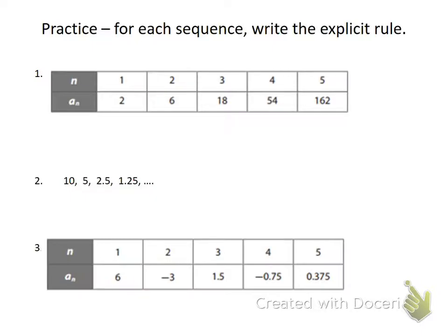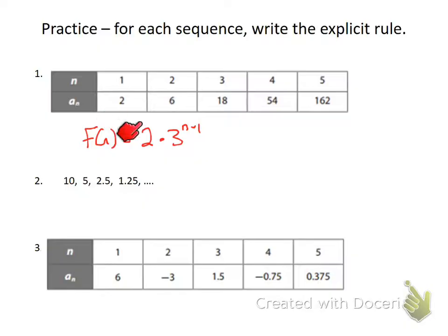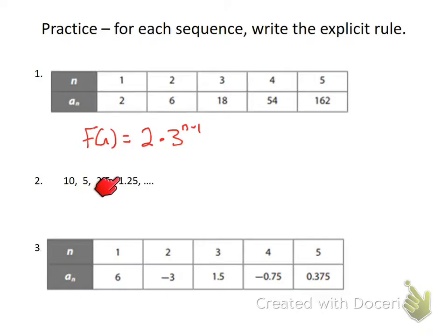I'd suggest you pause the video, try these on your own, and then play to see if your answer matches mine. Here we've got our sequence. Jumping into number one: our rule is f(n) equals our first term times our common ratio to the n minus one power. The common ratio is 3 because we're multiplying by three every time, so f(n) = [first term] times 3 to the n minus one.